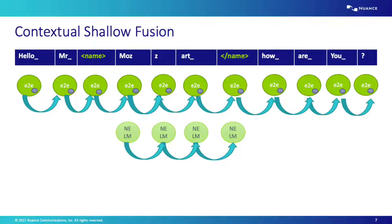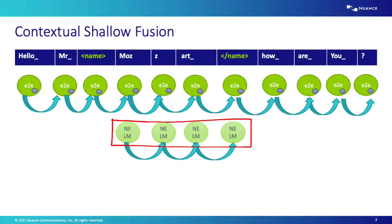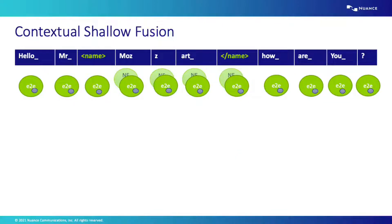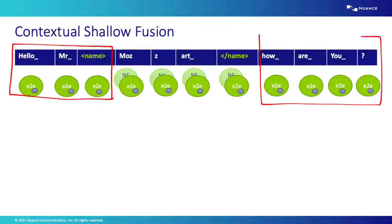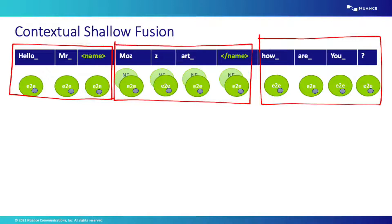In contrast to the standard end-to-end system, contextual shallow fusion adds a biasing language model distribution to approximate the named entity distribution expected in deployment, and this distribution is added together with the end-to-end distribution to bias towards the expected named entity distribution. So there are two regions in contextual shallow fusion: outside the tags, where tokens are scored using the log probability of the end-to-end system, and within-tag regions, where the end-to-end score is combined with the biasing language model representing the expected named entity distribution.